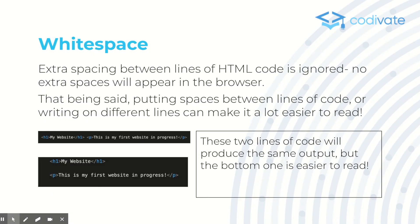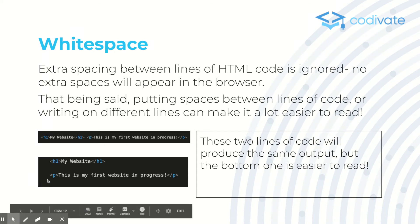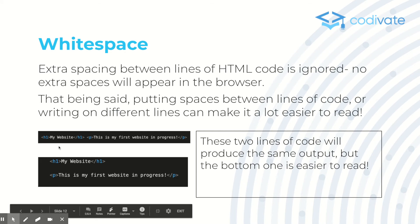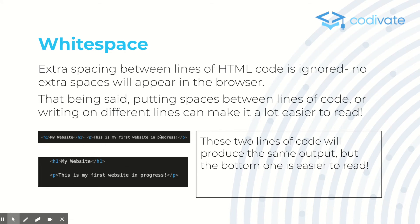White space: extra spacing between lines of code is ignored by the browser. Even if you add a space between two tags, it's not going to be displayed — writing tags on the same line or on separate lines prints out exactly the same thing. However, I suggest you take advantage of white space and separate your code into different lines, because it's a lot easier to read.